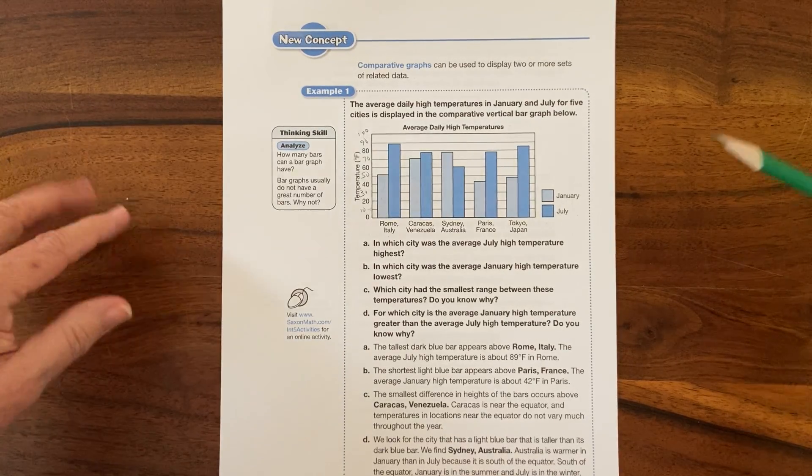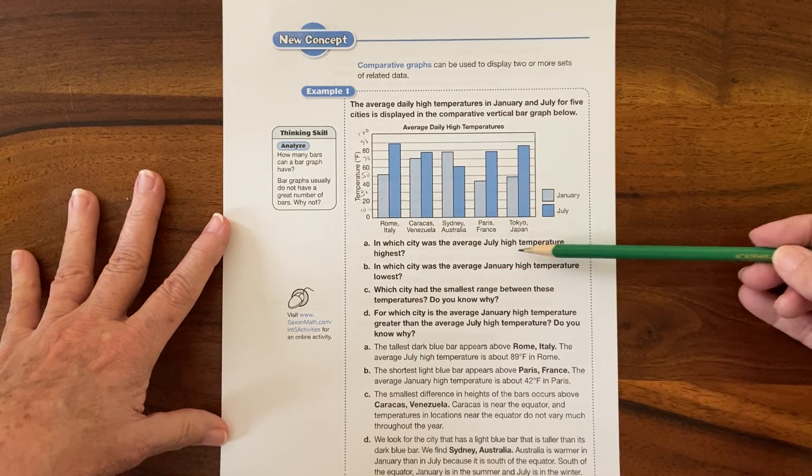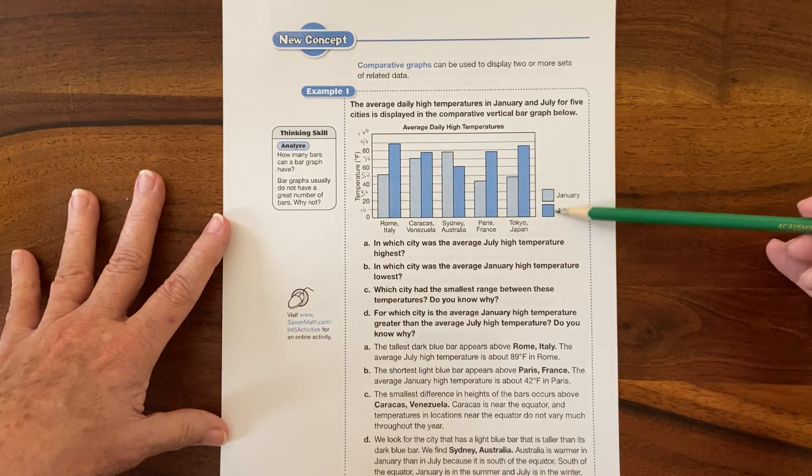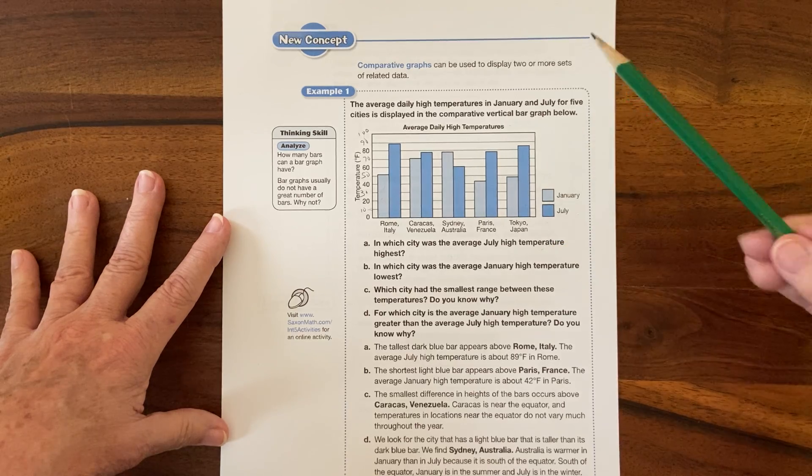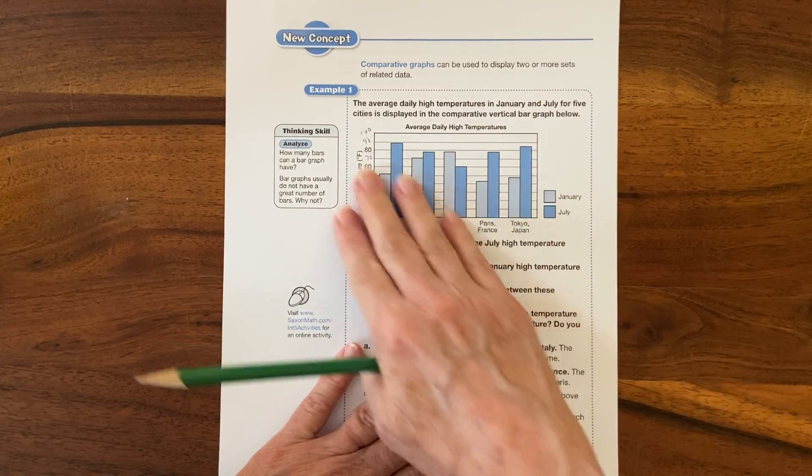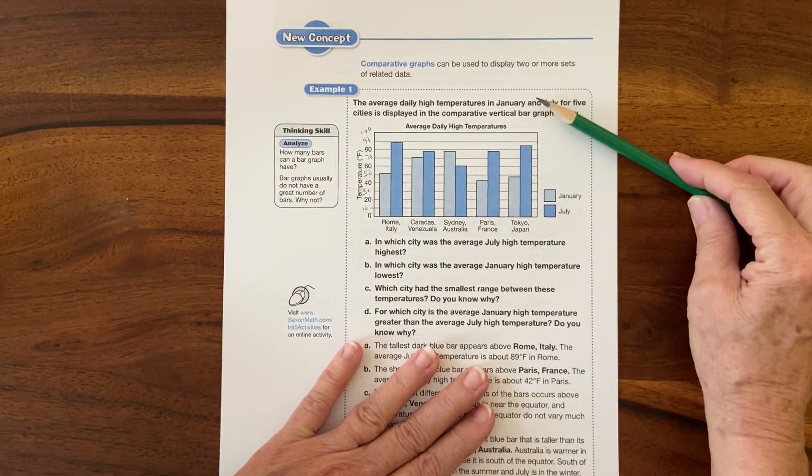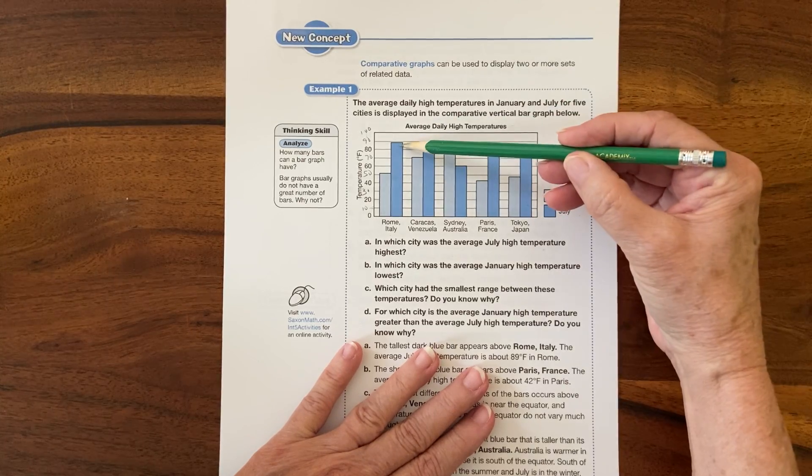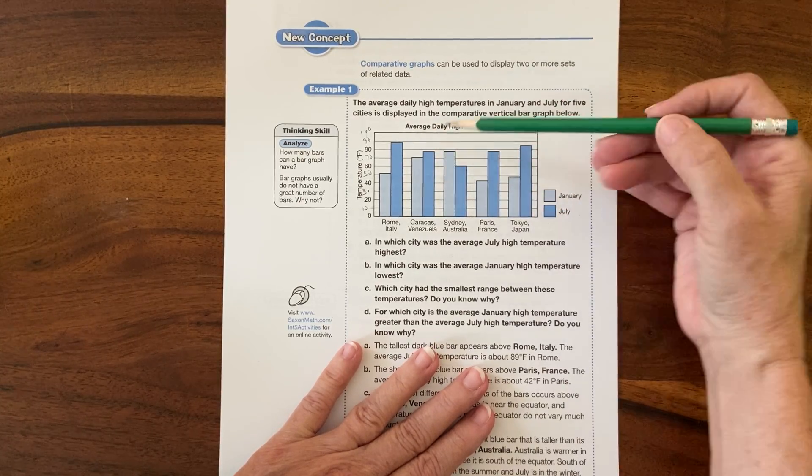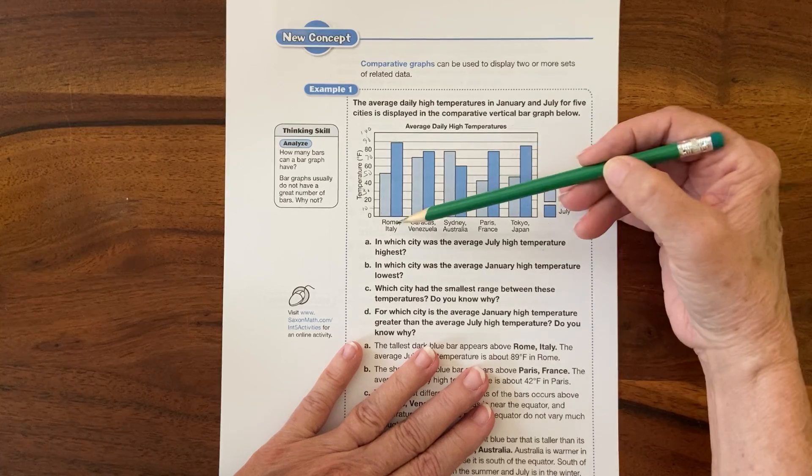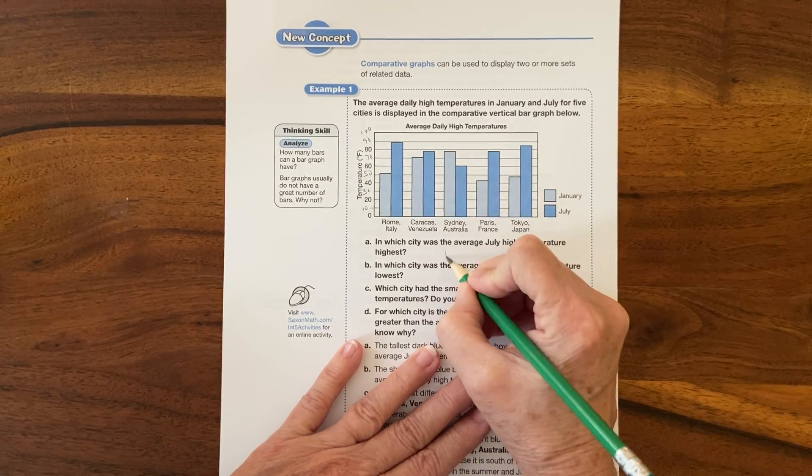Okay, so let's take a look. In which city was the average July temperature, so the dark blue, the highest? I can just glance at this graph and see which is the tallest dark blue bar. So it's this one right here, because nothing else comes up to that line. It's Rome, so the answer for that one's Rome.